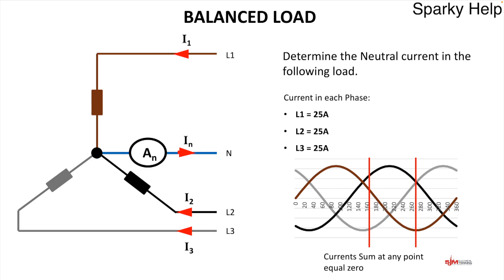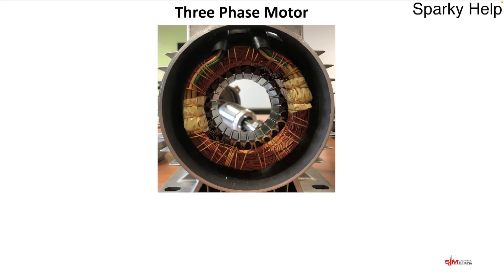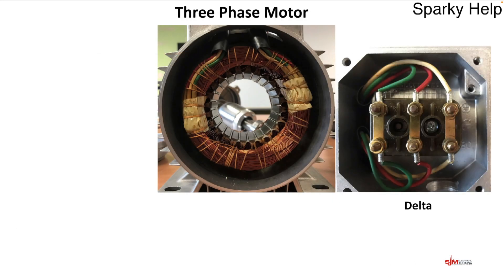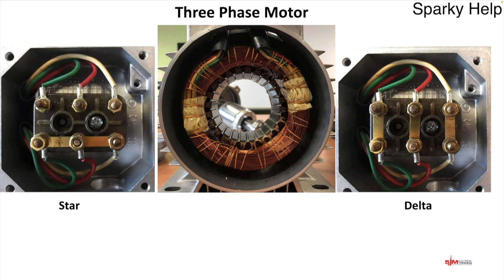When we put an ammeter in the neutral conductor of a balanced load, the current flow through the neutral will be zero. If it's zero, we don't need it — it can disappear. Hence, in three-phase motors, whether connected in star or delta, there is no neutral connection, because they are a balanced load.